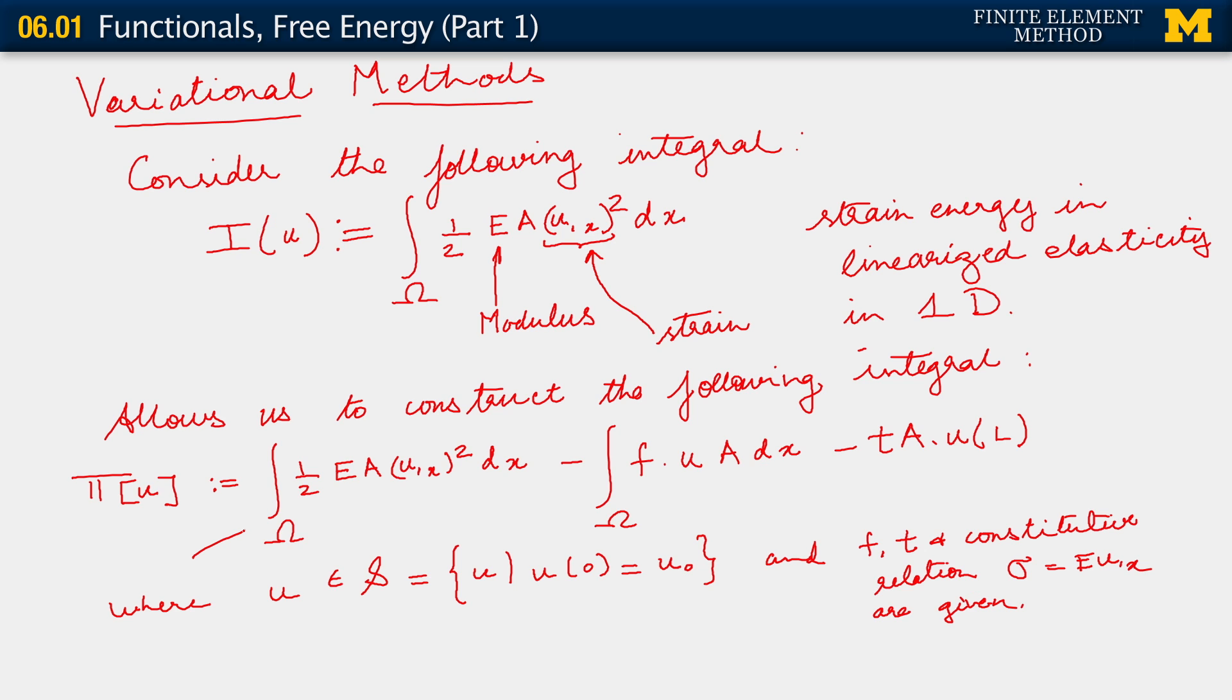Note that the first term is the strain energy. This term gives you the total work done by the force F on the displacement. And this, recognizing that TA is also a force, is the work done by the traction specified for the Neumann boundary condition on the displacement at that end. So, in the context of elasticity, if you've studied that problem, this is something that you probably recognize as a potential energy.